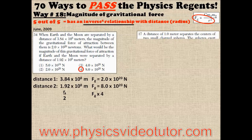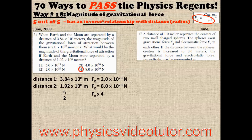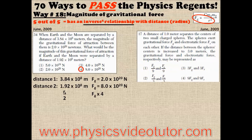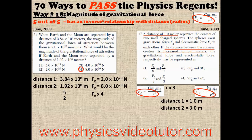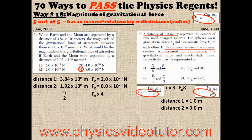Here's another question from the same regents that is asking about the same relationship, and it might even look like something else you've seen before. It starts off with a distance of 1 meter, but then the distance between the spheres is increased to 3 meters, or 3 times as much. Thanks again to the inverse square relationship, both Fg and Fe will be reduced by 9 times as much.